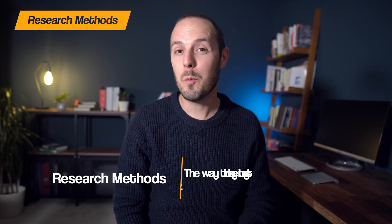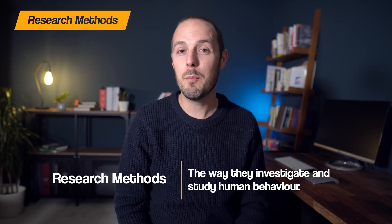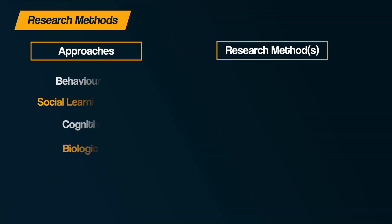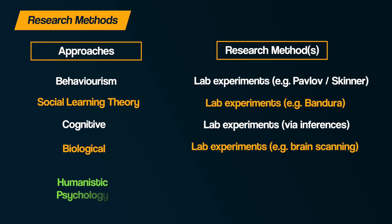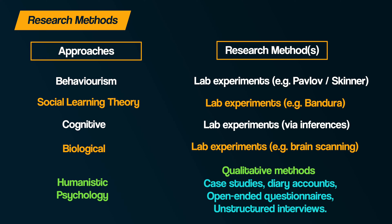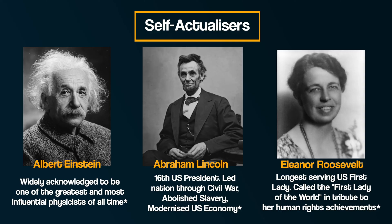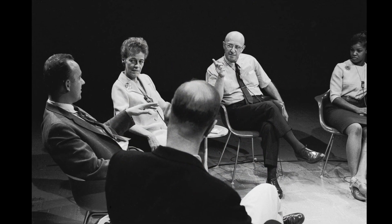In discussing the research methods used by humanistic psychology, we are referring to the way they investigate and study human behaviour. In contrast to many of the other approaches covered in this series, who often adopt scientific methods such as lab experiments, humanistic psychology takes a different path. They often use qualitative research methods that include case studies, diary accounts, open-ended questionnaires, and unstructured interviews. For example, Abraham Maslow based his ideas of self-actualisation on his research of individual historical figures, and Carl Rogers' work on the self is heavily based on his unstructured interviews with his clients.